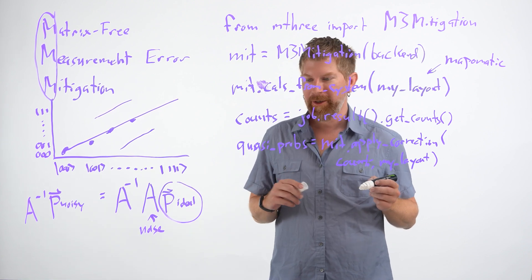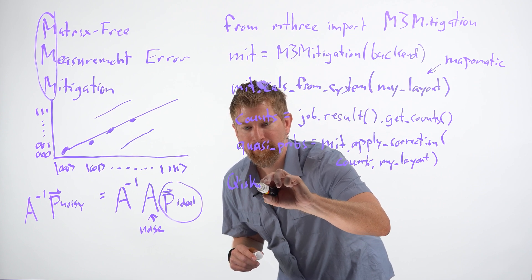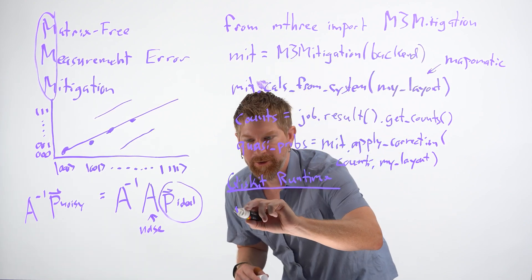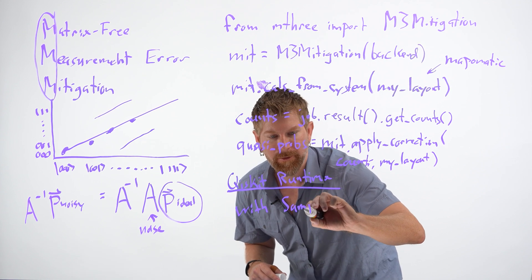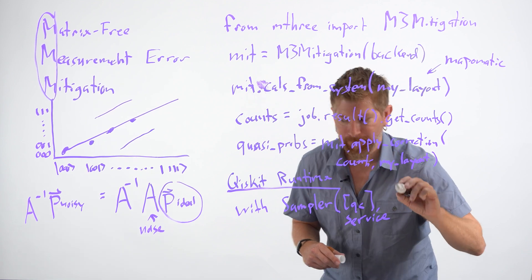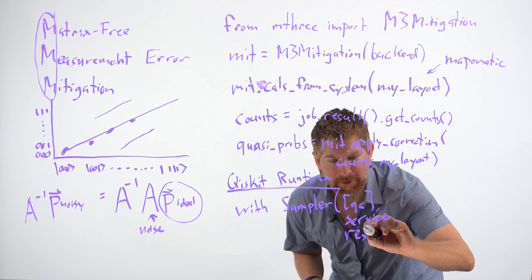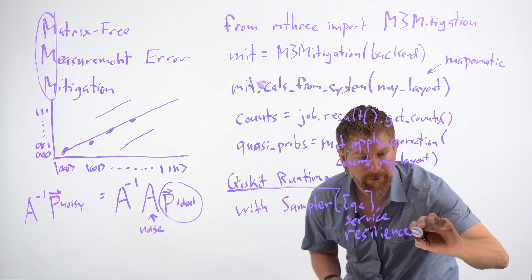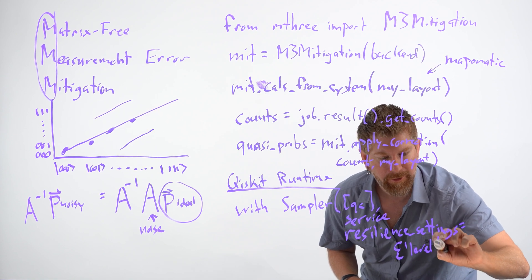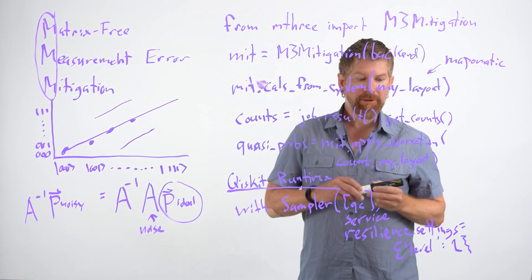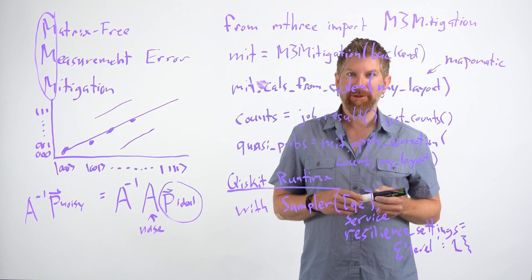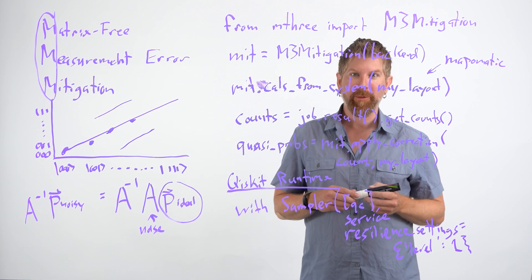There's another way that you can interact with measurement error mitigation, and that's via Qiskit Runtime. Even easier is when you're constructing the Sampler — you're going to put your quantum circuits in there, you're going to put your service, but we have another setting called resilience_settings. And inside there, we can set that to a dictionary with the value 1, which will enable this kind of process on the backend without you having to think about it and go through the process. Measurement error mitigation is a classical routine that is usually always a good idea to get better quasi-probabilities from noisy measurement outcomes.